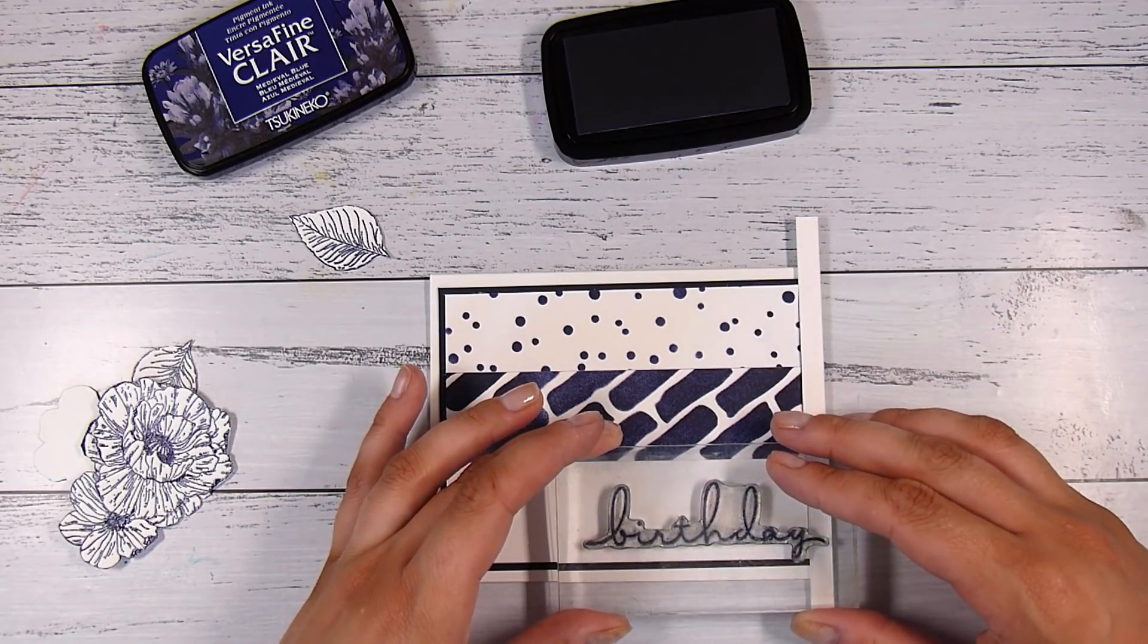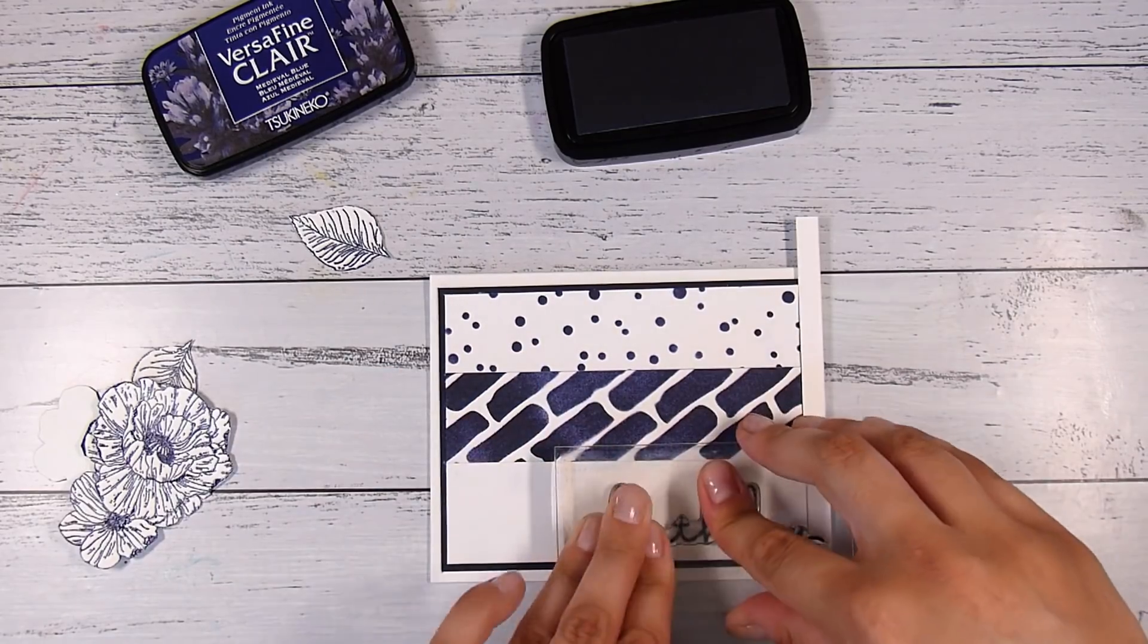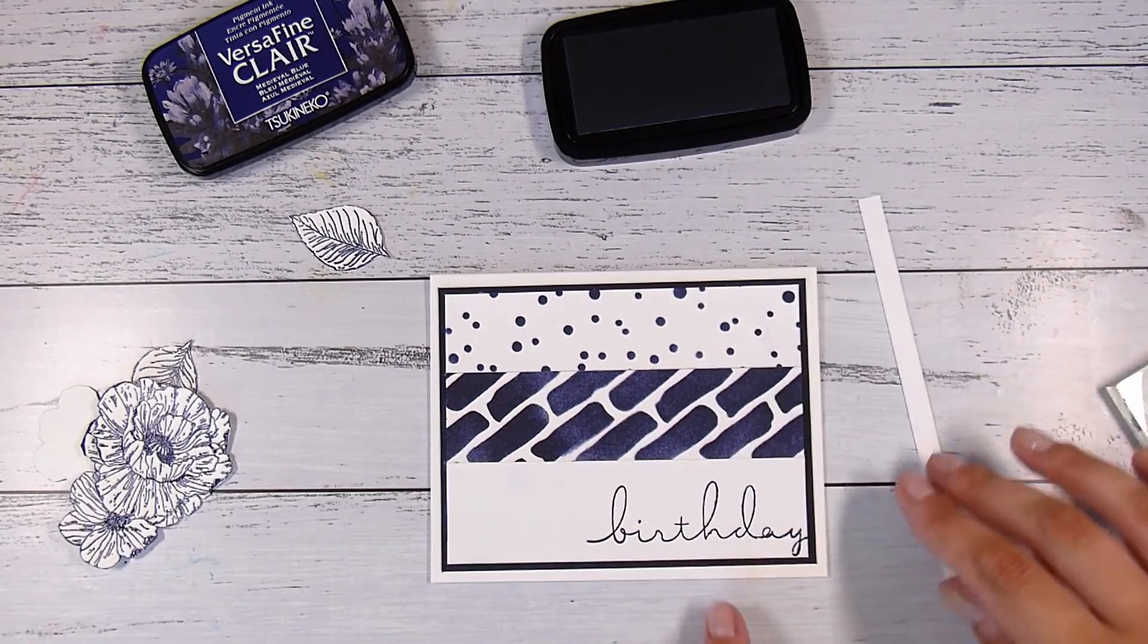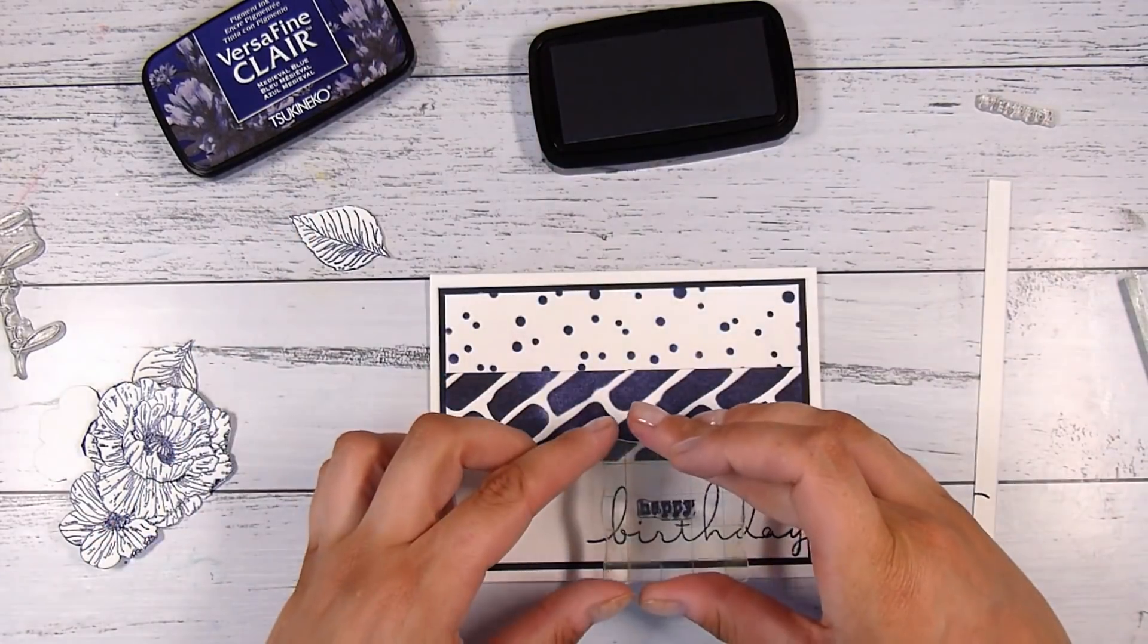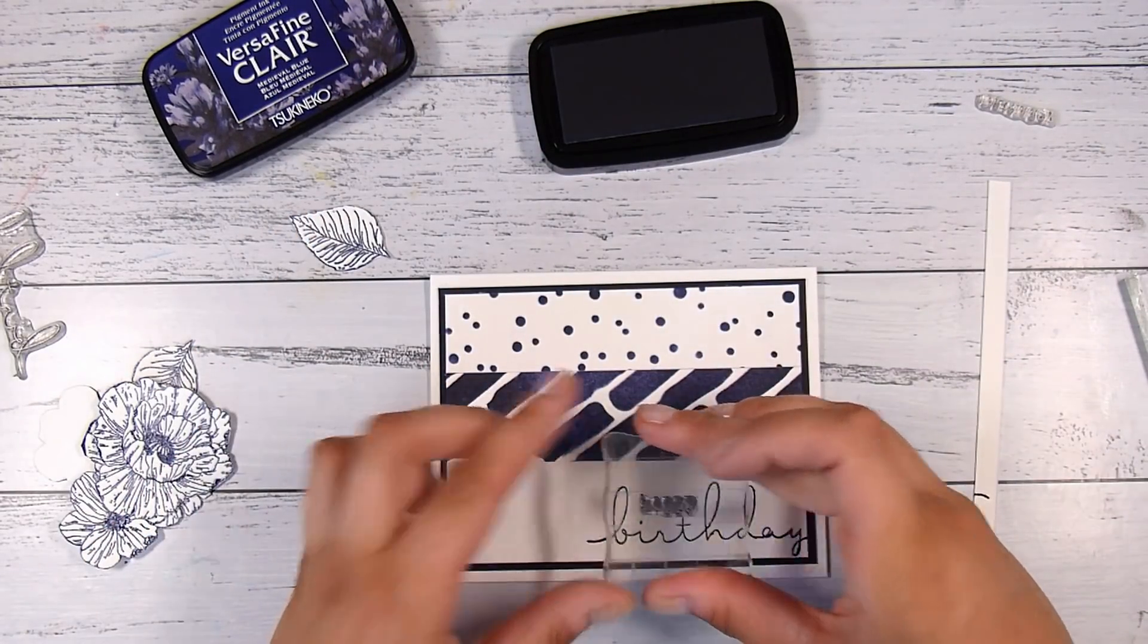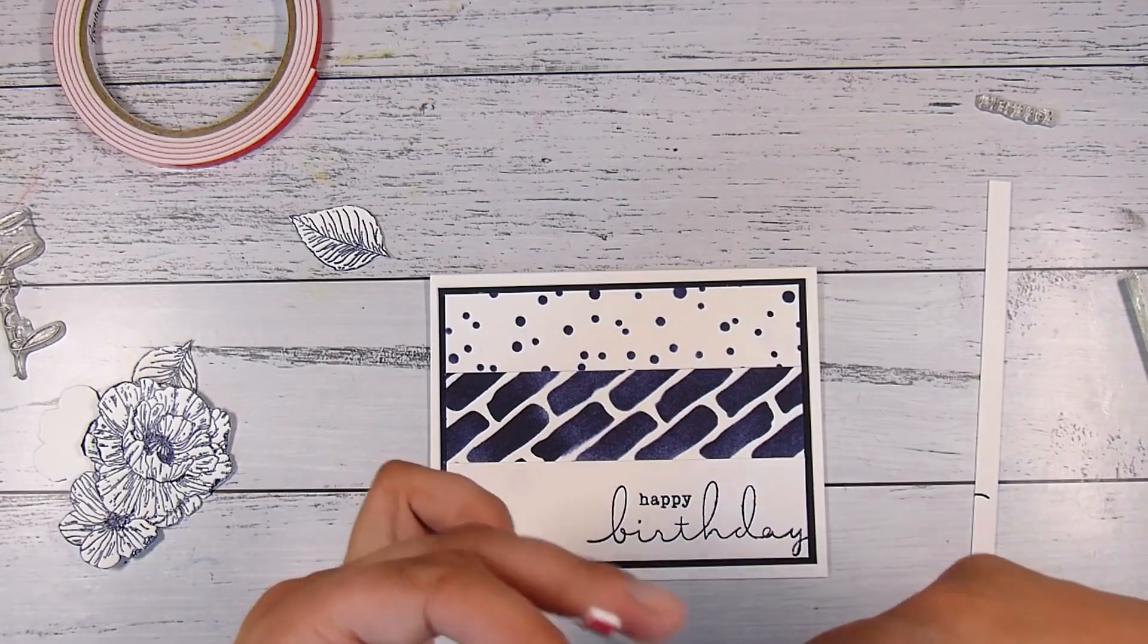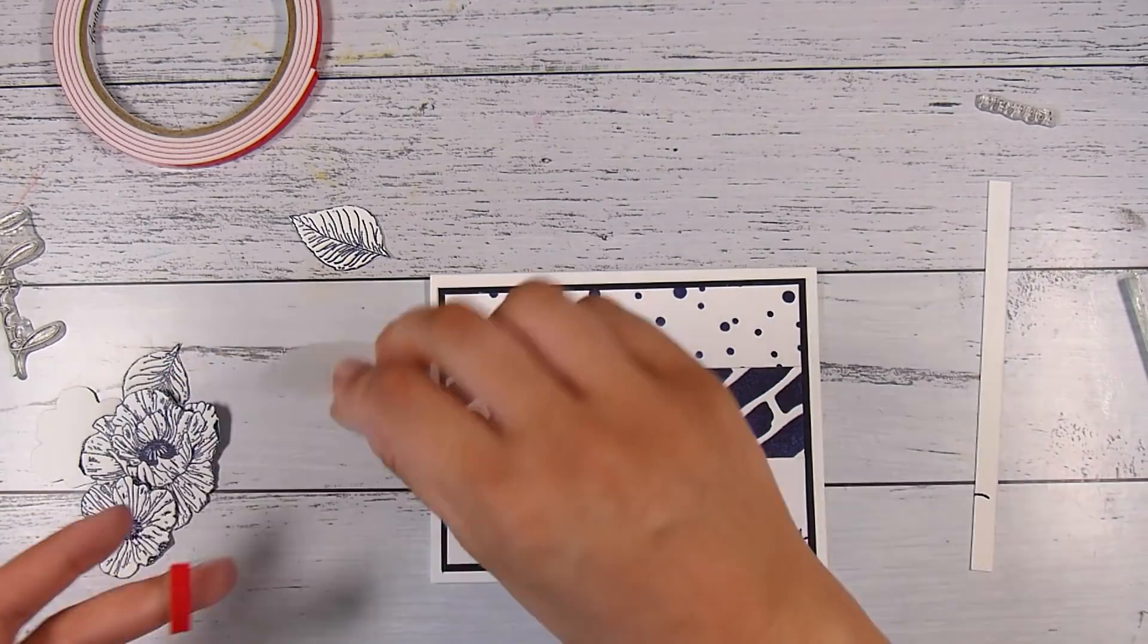I did use a little scrap piece of paper there to mask off just that little tail of the Y so it didn't go on my border. Then I'm using a small happy with that scripty birthday font. A really good stamp set. I must admit, very glad that I purchased that one.